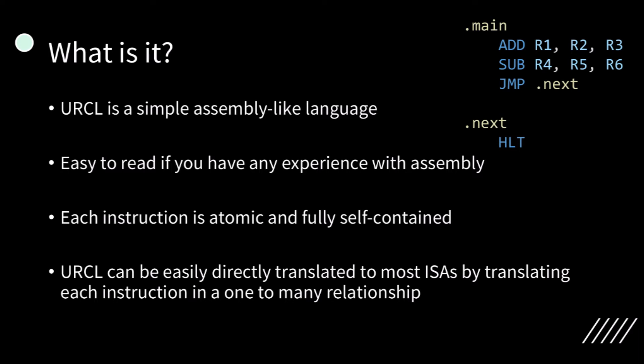So what is it? URCL is a simple assembly-like language. It is easy to read if you have any experience with assembly. There's an example of some URCL code at the top right. Each instruction is atomic, meaning each instruction is executed sequentially, and the next instruction is not executed until the previous one has finished. The instructions are also fully self-contained, meaning they do not require any information outside of the operands specified within the instruction itself to be run.